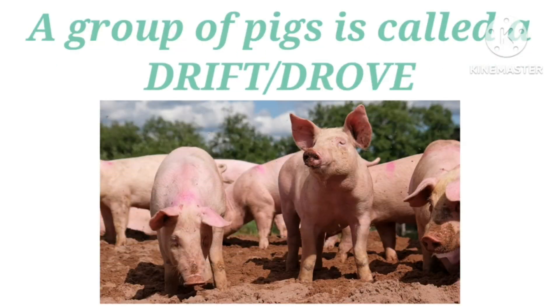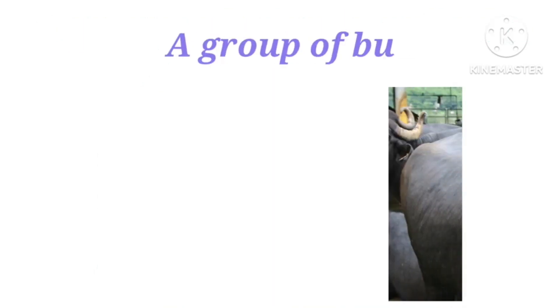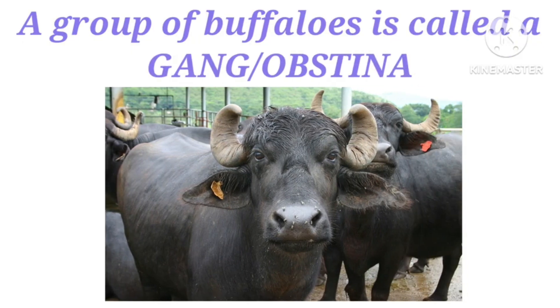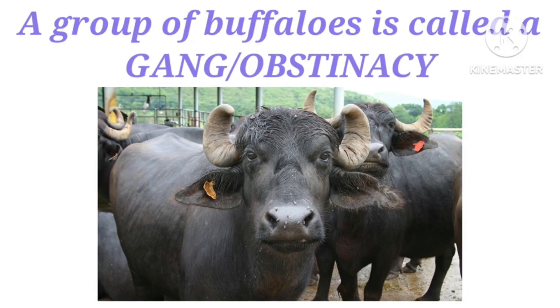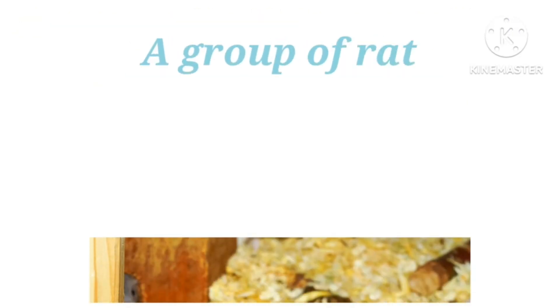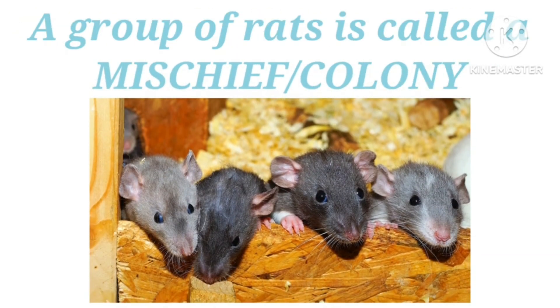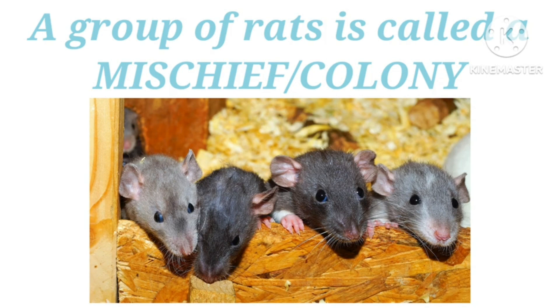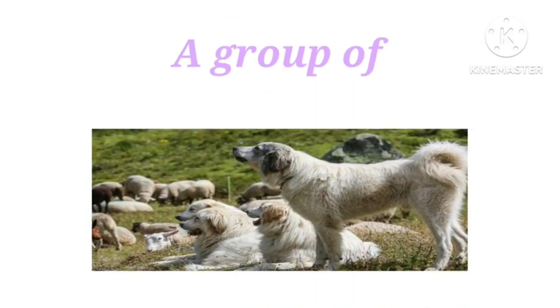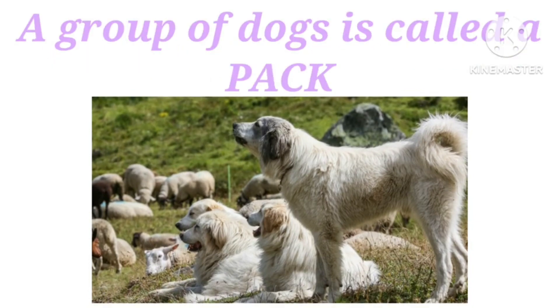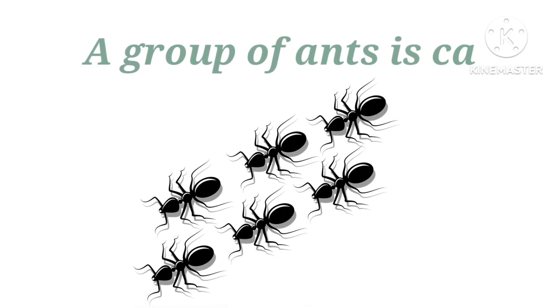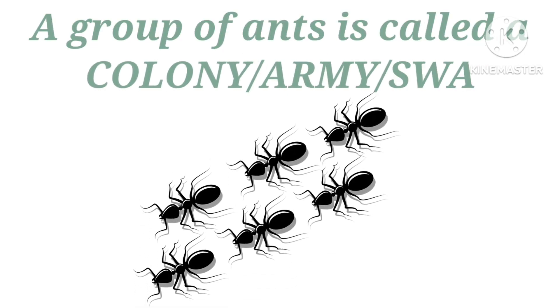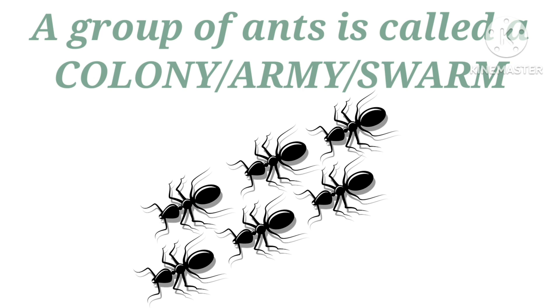A group of pigs is called a drift or drove. A group of buffaloes is called a gang or obstinacy. A group of rats is called a mischief or colony. A group of dogs is called a pack. A group of ants is called a colony, army, or swarm.